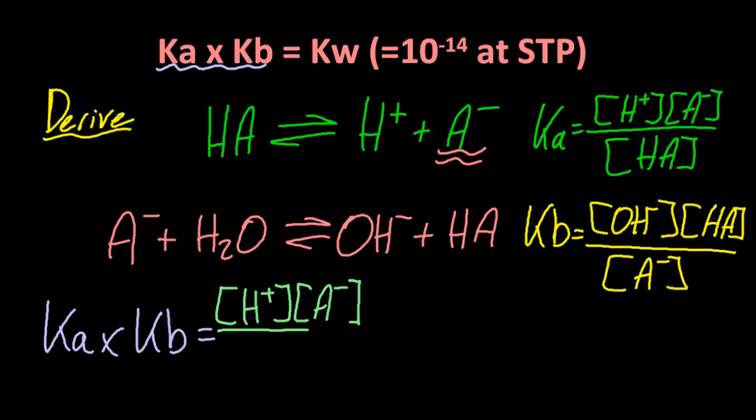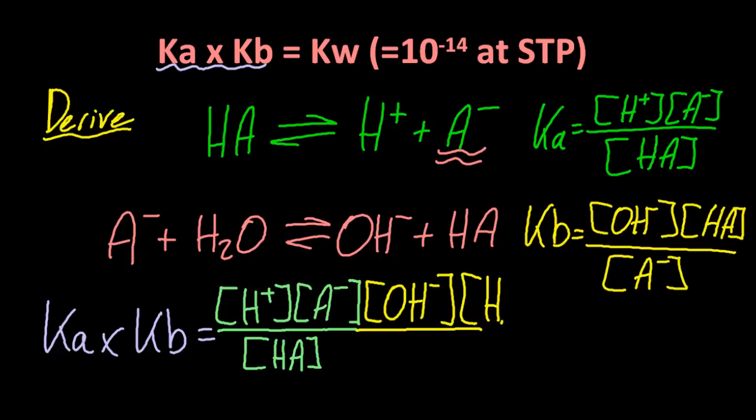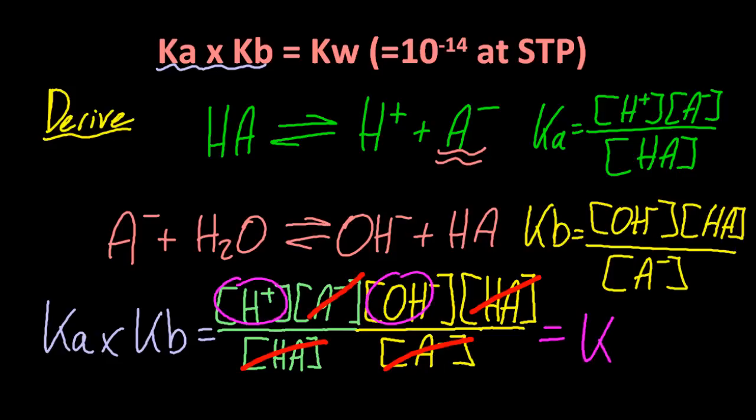Green lettering is from the Ka, and the yellow lettering is from Kb. That looks complicated. Is that Kw? Yes it is. Let's cancel what appears at the top and the bottom. That just leaves me with H+, multiplied by OH-. That's Kw. And that's normally 10 to the minus 14 at STP.